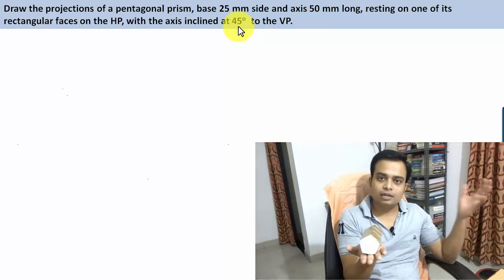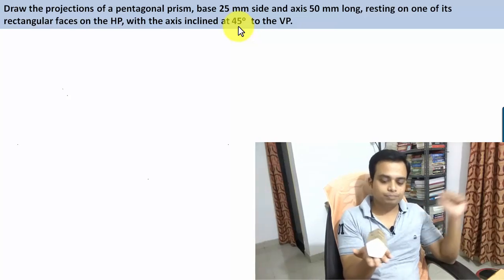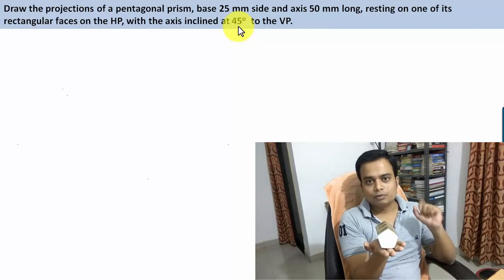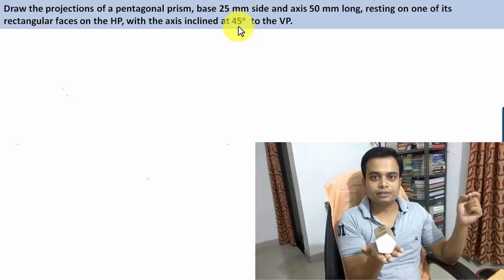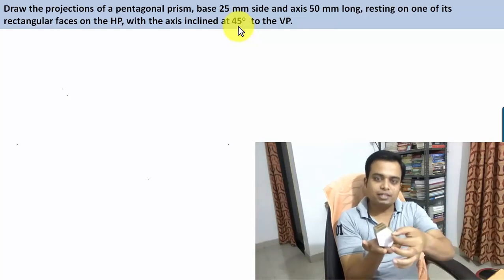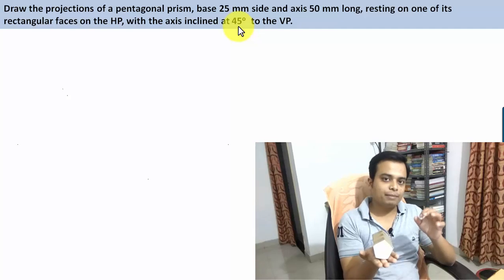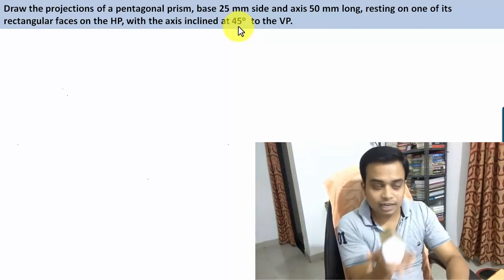This distance can only be seen from the top. The most important thing is where to start — whether to draw the front view or the top view. From where can you see the true shape of its base? Obviously the answer is from the front, therefore you have to begin by making the front view first.